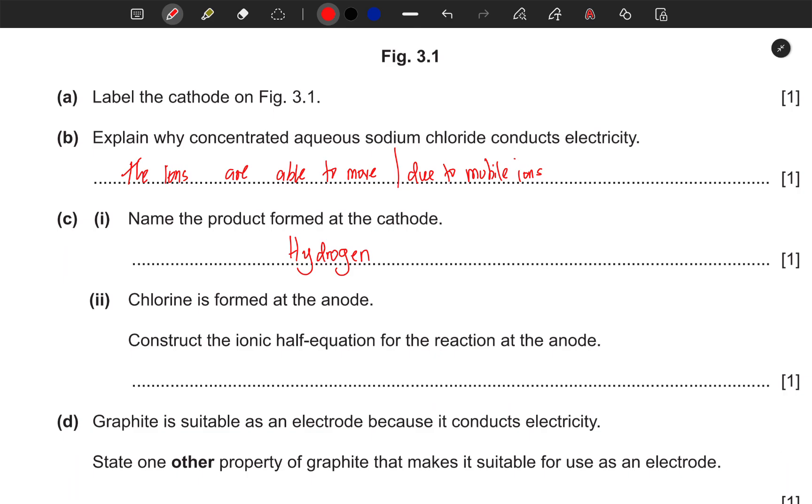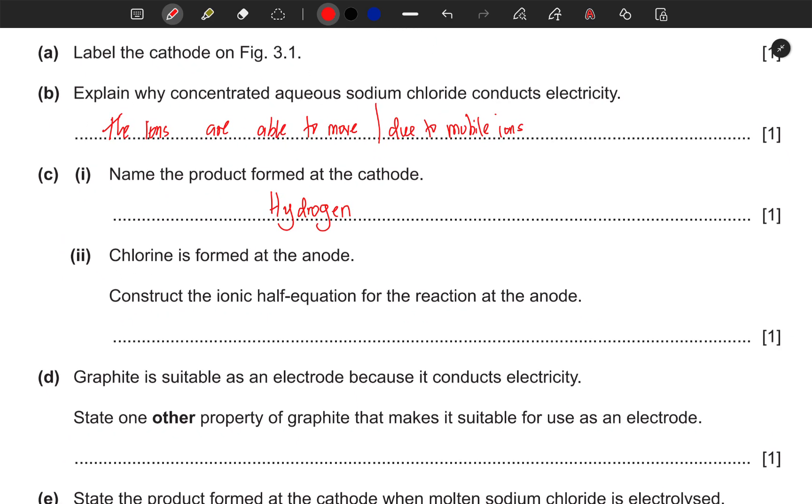Construct the ionic half-equation for the reaction at the anode. Since chlorine is being formed, we need a gas at the right side of the equation. We need to have an ion on this side. Because there's a 2 here, we need to put a 2 there, and to balance the equation we need to add 2 electrons on the right-hand side.